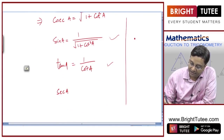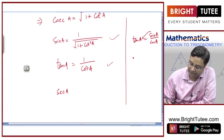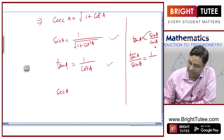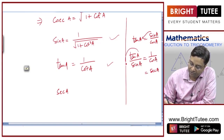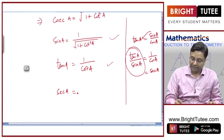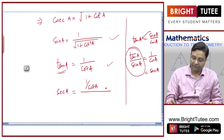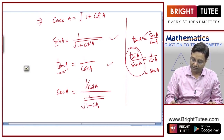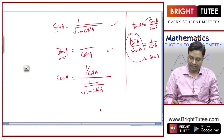Secant a can be found using: tan a equals sin a by cos a. Bringing sin a to the left gives tan a upon sin a equals one by cos a, which is secant a. So secant a equals tan a divided by sin a — that is, one by cot a divided by one by square root of one plus cot squared a.